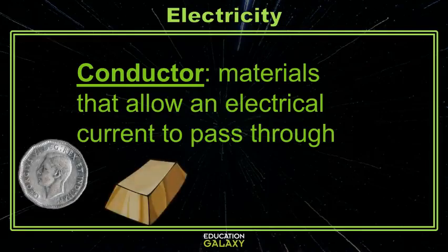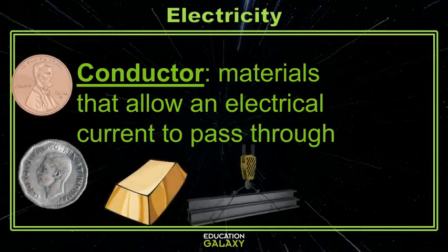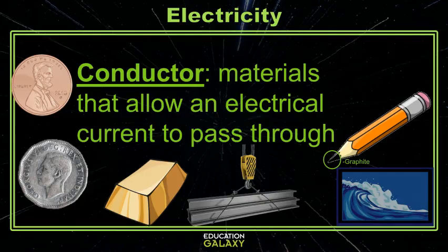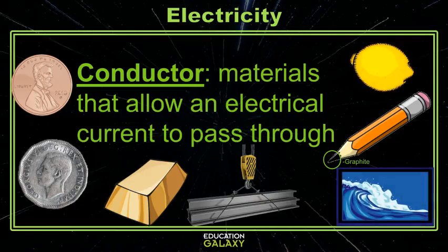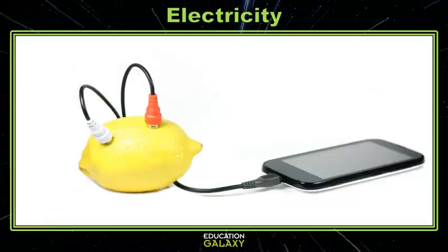Conductors are generally made out of metals like silver, gold, copper, and steel. That can also be other things like graphite, salt water, and acidic fruit juices. That's why you can use a lemon to create a battery for your phone.